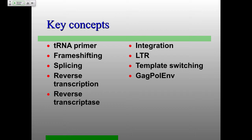A couple of key concepts as far as retroviruses are concerned, really at the molecular level. One is that they use tRNA primers for their genome replication, which is really bizarre and fascinating — it's an RNA primer for DNA replication. Frame shifting is also absolutely critical for replication of these retroviruses.